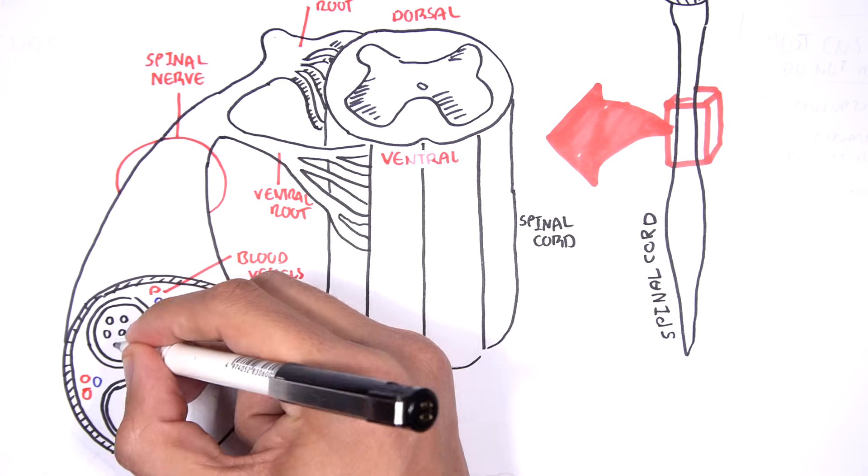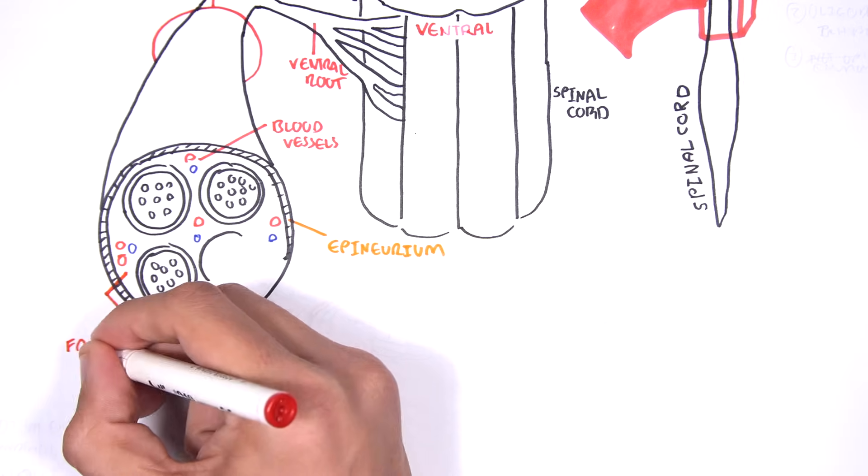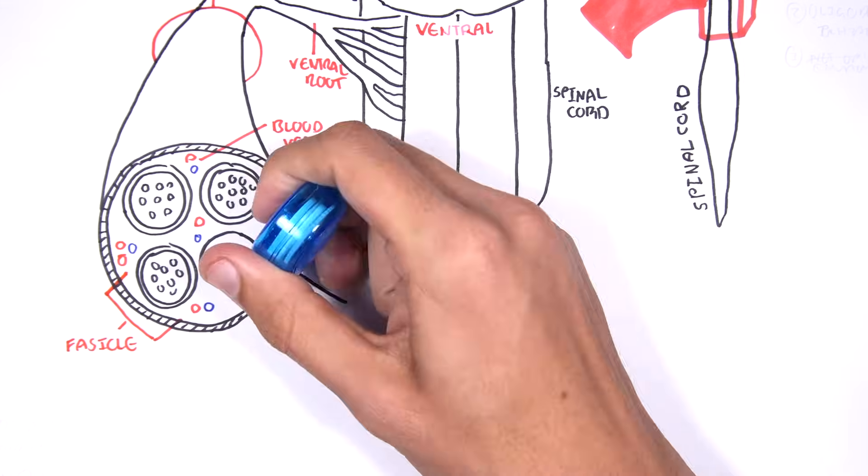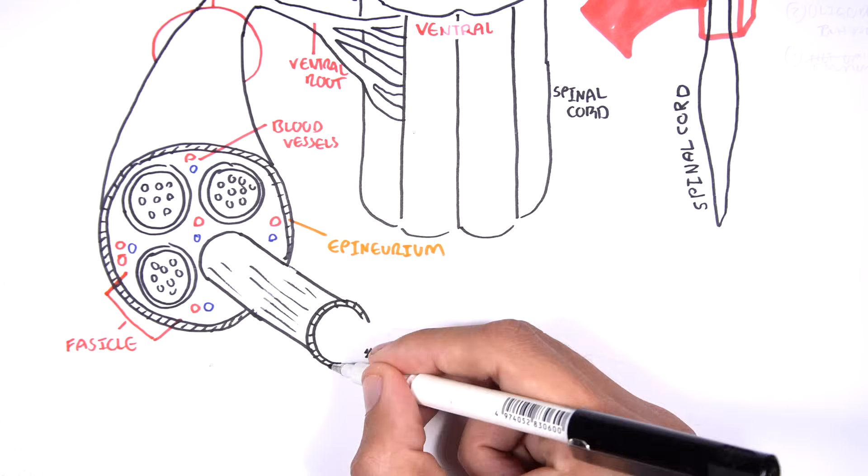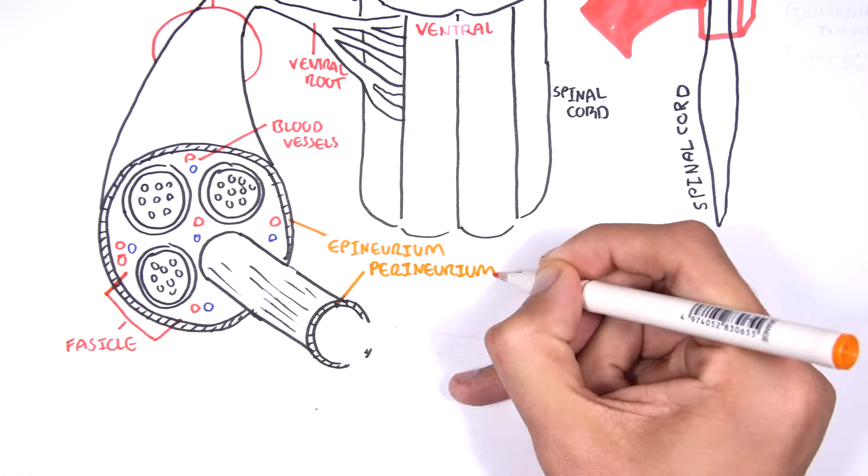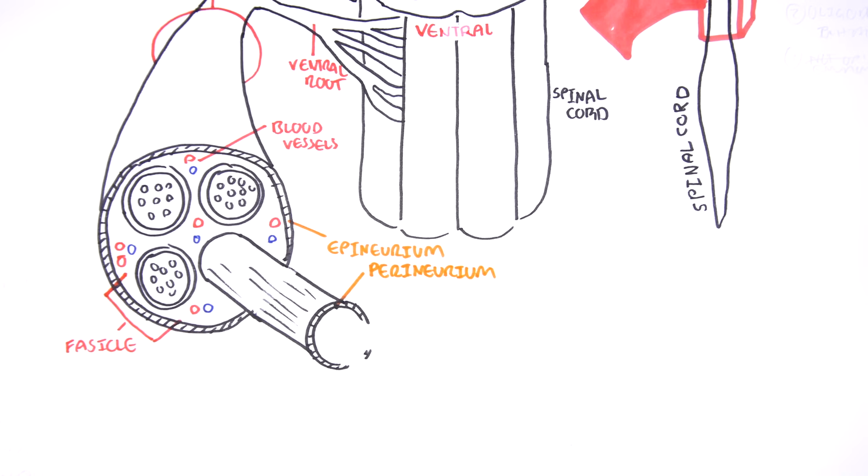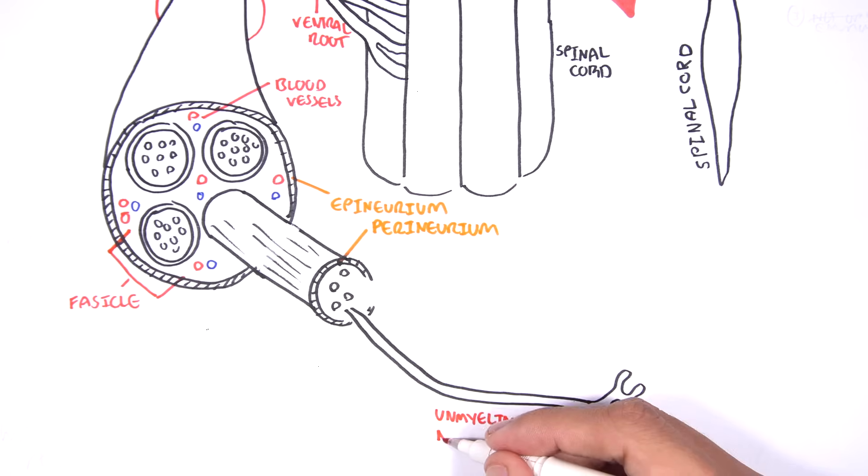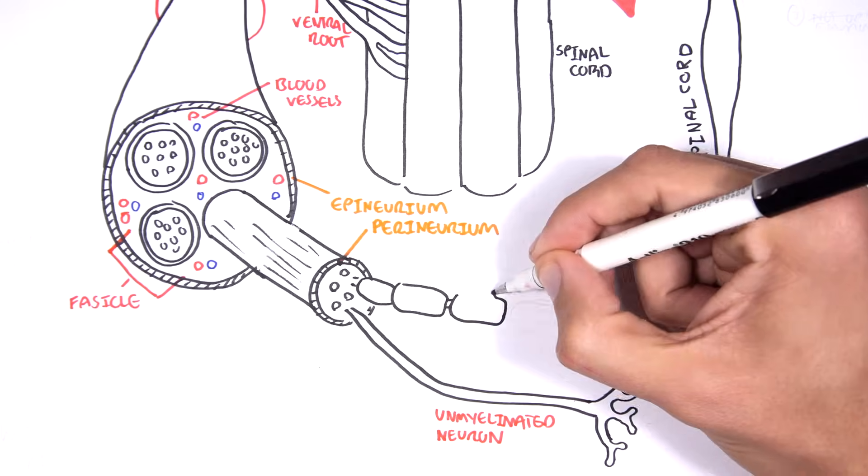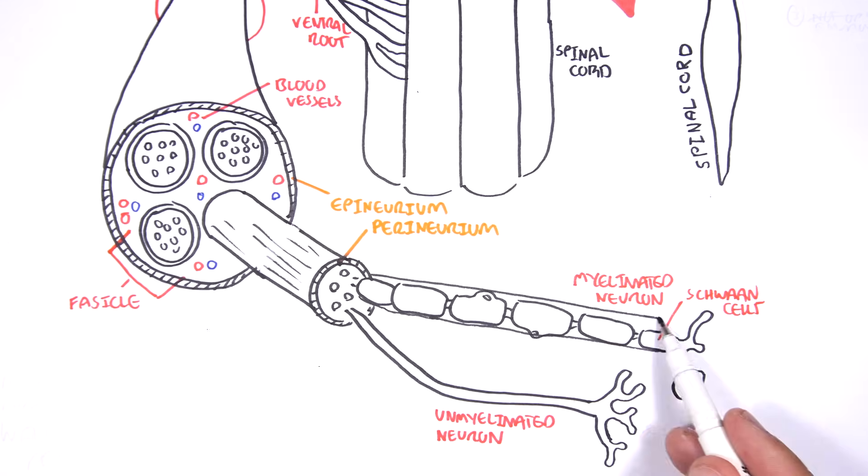Now, within the spinal nerve, we have clusters of bundles of neurons making up a fascicle. If we were to pull out one of these fascicles, it is surrounded by another sheath called the perineurium. And remember, all these sheaths are essentially protective. And within each fascicle, we find neurons. Neurons here can be either unmyelinated or myelinated with Schwann cells. And surrounding these neurons, we have another sheath called the endoneurium.